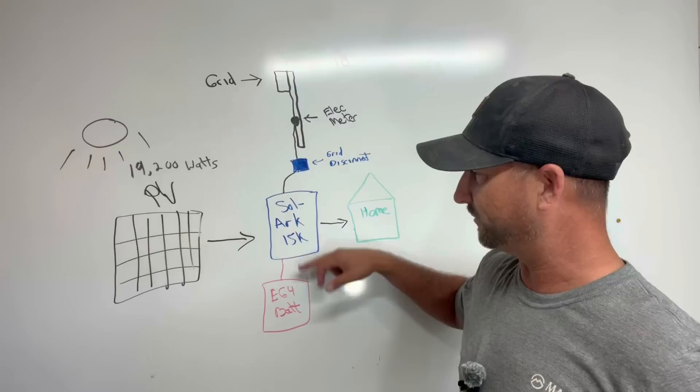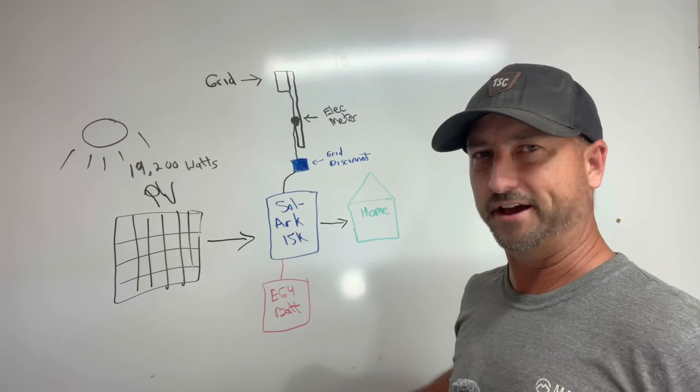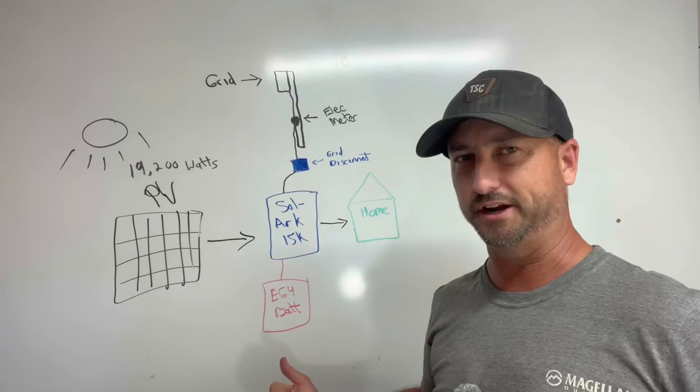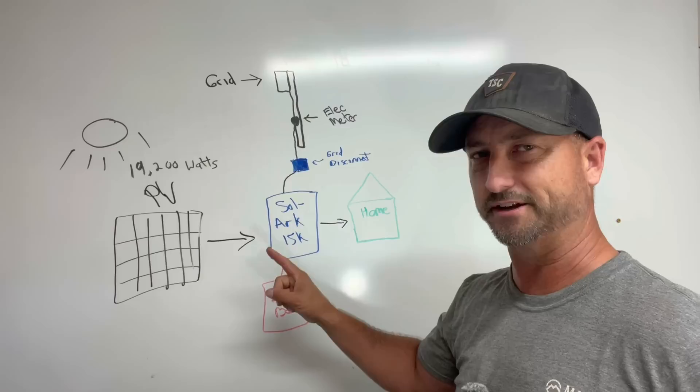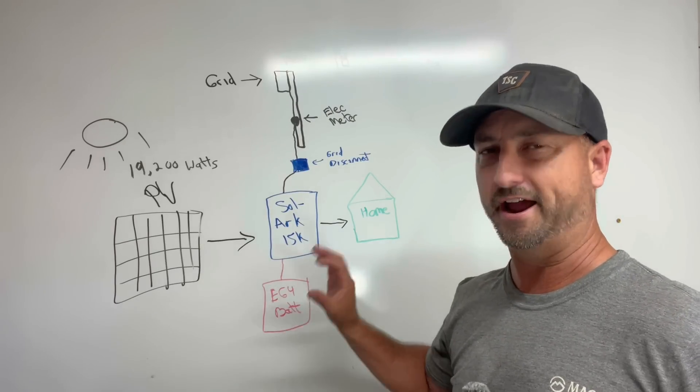Then you've got the batteries down here that will supplement the system and power the system basically when there's no sun. I've got a PDF you can download for free if you're interested that goes into all the details, the wiring schematics, type of wire I use, conduit, everything I use for the install on how I did this system. You can download that for free at solarpdfdownload.com.